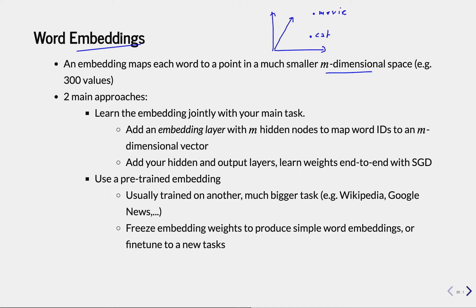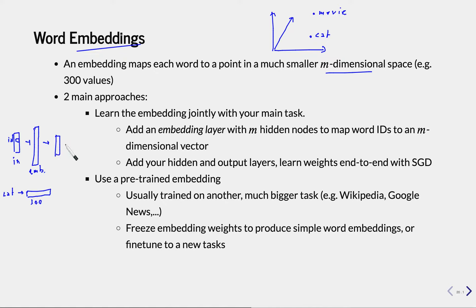There are two main ways of finding this embedding. The first way is to learn the embedding with a task. We have some input text, give it to an embedding layer, and this embedding layer has a set of weights. It basically has to learn, for every possible input word, a 300-dimensional embedding for each word. If the word 'cat' comes in as an ID, the embedding layer will output the 300-dimensional representation for that word. Then we give that to some other layers and at the end we have an output, and we can train this embedding.